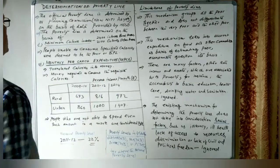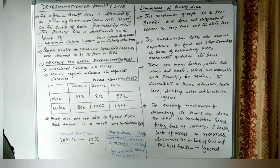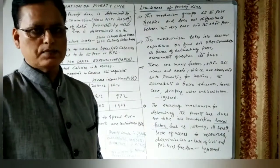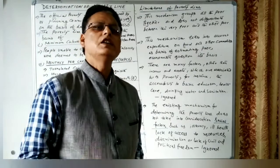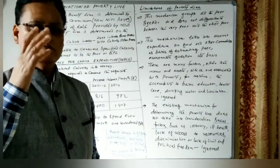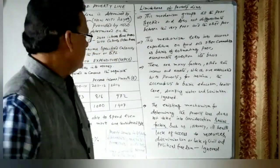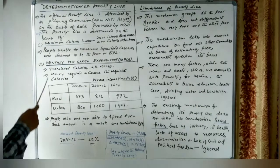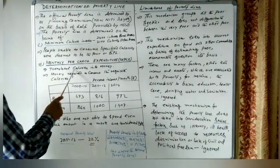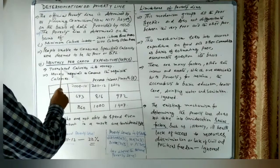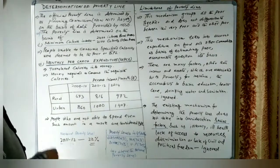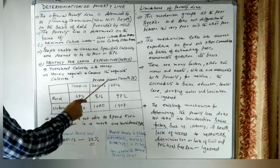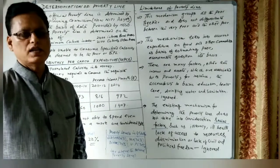To obtain the required number of calories, a certain income is needed, since income equals consumption expenditure. The Monthly Per Capita Expenditure method translates calories into money — specifically, the money required to consume the requisite calories. This represents the minimum monthly income per person needed to maintain the daily calorie requirement.